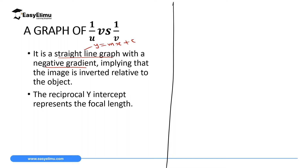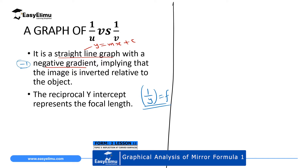The gradient of this graph is going to be negative one. The negative implies that the image is inverted — remember from ray diagrams, the image formed by a concave mirror is always inverted unless the object is between f and p. The negative gradient implies the image is inverted relative to the object. On further analysis, the reciprocal of the y-intercept represents the focal length of the mirror.